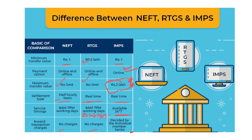Settlement type: NEFT is on a half-hourly batch basis, RTGS and IMPS are real-time. Service timings: NEFT 8 a.m. to 7 p.m.; RTGS is now available 24x7 into 365 days; IMPS is 24x7. Transaction charges: RTGS — no charges; NEFT — no charges; IMPS charges are very minimal but vary from bank to bank with no fixed ceiling rate set by RBI. So friends, I hope NEFT, RTGS, and IMPS are now clear — remember their full forms, limits, and regulators: IMPS by NPCI, NEFT by RBI.